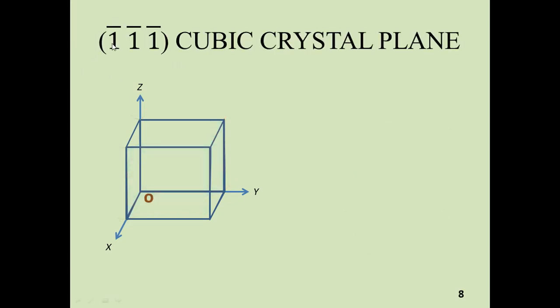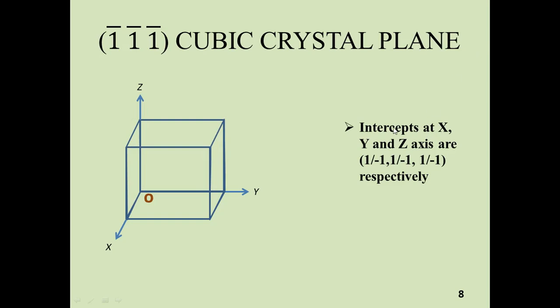Next is the (1̄1̄1̄) cubic crystal plane. The first step is to find the intercepts at the x, y, and z-axis: minus 1 over 1 at the x-axis, minus 1 over 1 at the y-axis, and minus 1 over 1 at the z-axis respectively. The second step is to shift the origin such that all three x, y, and z axes become negative.